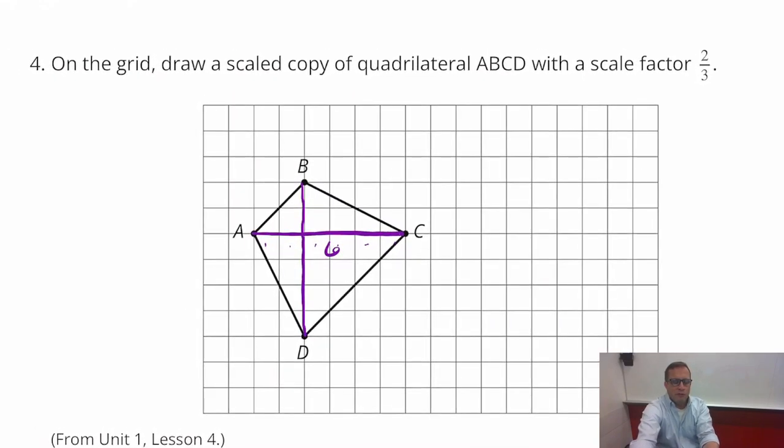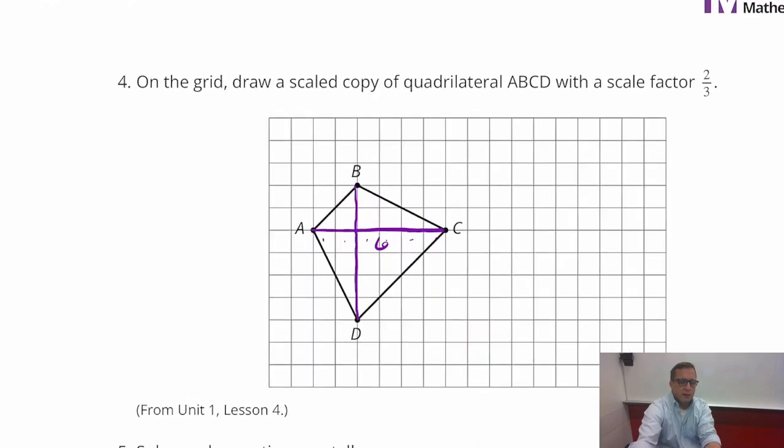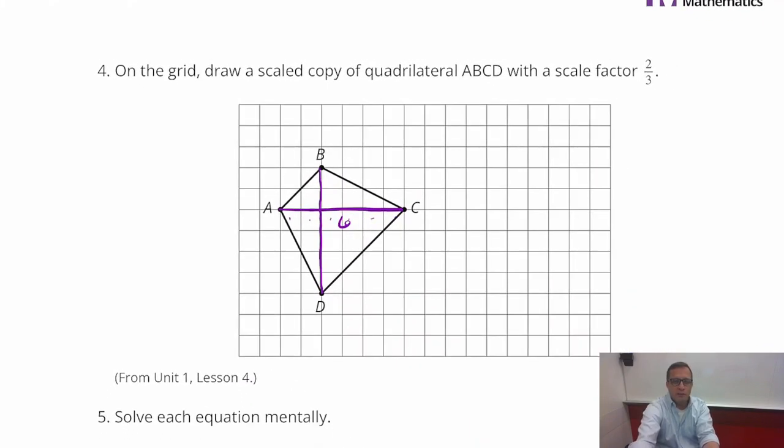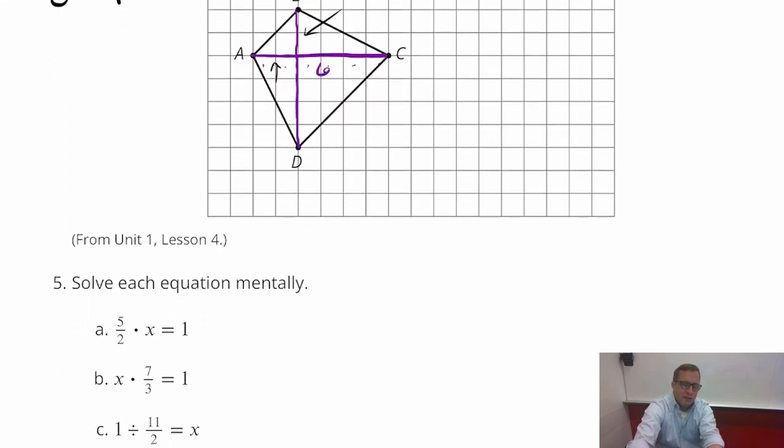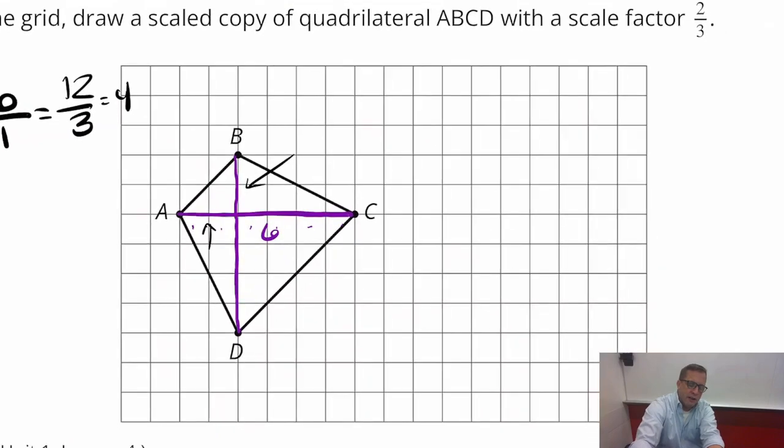So if we're doing a scale factor of two-thirds, two to three, that means it's getting smaller, right? Because that scale factor is less than one. So I'm going to do two-thirds times six. So two-thirds times six equals twelve-thirds, which is four. So what we want to do is we want to make, I know it kind of looks like a kite now, but now what we want to do is we want to make these lines equal to four. But it's not as easy as just drawing a line that's four and another one that's four.